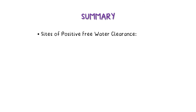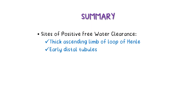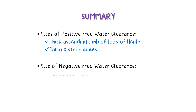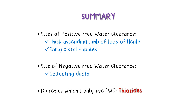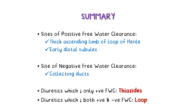In summary, normally there are two sites of positive free water clearance in the nephron: the thick ascending limb of the loop of Henle and the early distal tubules. There is one negative free water clearance site — the collecting ducts — in the presence of anti-diuretic hormone. Thiazide diuretics decrease only positive free water clearance, while loop diuretics decrease both positive as well as negative free water clearance.